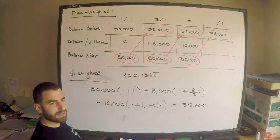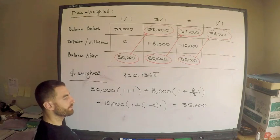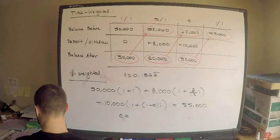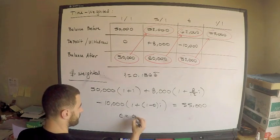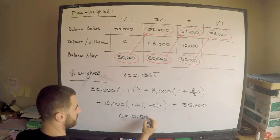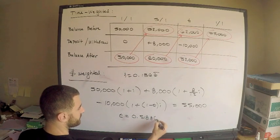We have i. Remember from the time-weighted return, i is 0.1366 forever. Solve for t. This is not hard. This tells you that t is equal to 0.5886.